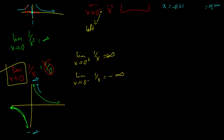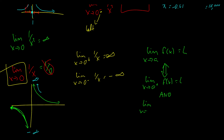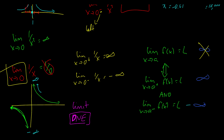We have a theorem that says: in order for the limit as x approaches a of f of x to equal L, both the left-hand limit and the right-hand limit must equal the same value L. Here the right-hand limit is infinity but the left-hand limit is negative infinity — they don't agree. So we say the limit does not exist, written as DNE. All professors will know what that means.